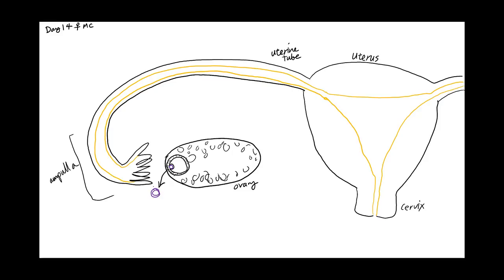So the oocyte needs to be swept up into the distal end of the uterine tube called the ampulla. At this point, the oocyte is surrounded by a thick non-cellular structure called the zona pellucida. And the oocyte itself is arrested at the second metaphase of meiosis. This second phase of meiosis will not complete until fertilization occurs, where the genetic material from the spermatocyte is present within the cytoplasm of the oocyte.